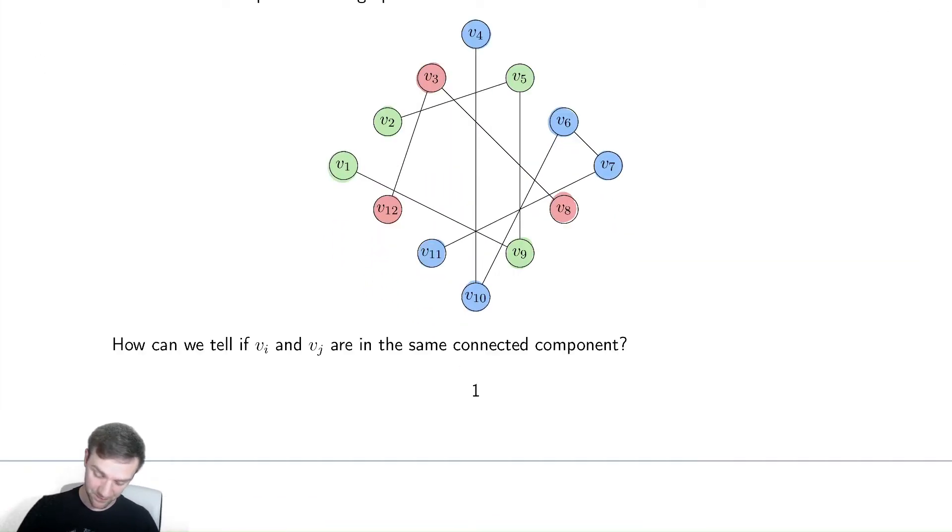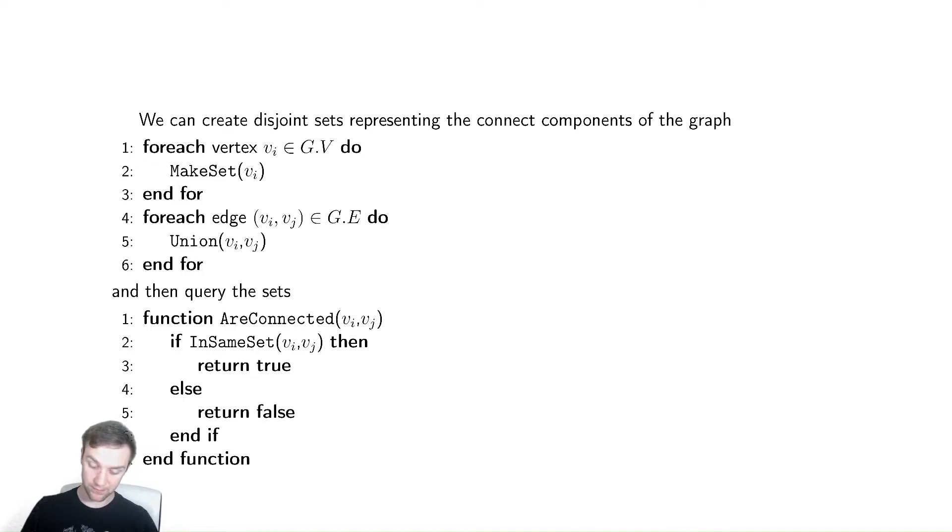So let's look at some code for how we can do this. If we scroll down, what we're going to do is loop over every single vertex and make a set, and then we're going to loop over every single edge and union together every single pair of vertices that share an edge.